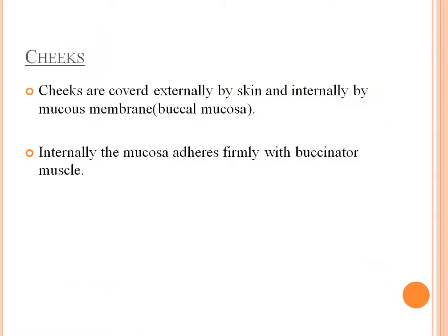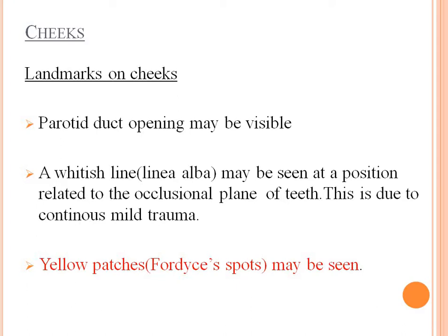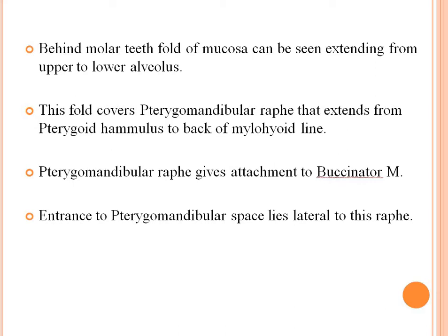The cheeks are covered externally by skin and internally by the mucous membrane, the buccal mucosa. Internally, the mucosa adheres firmly with the buccinator muscle. Landmarks of the cheek include the parotid duct openings, which may be visible, and a whitish line called linea alba, seen at a position related to the occlusal plane. Behind the molar teeth, a fold of mucosa extends from the upper to the lower alveolus, covering the pterygomandibular raphe that extends from the pterygoid hamulus to the back of the mylohyoid line. The pterygomandibular raphe gives attachment to the buccinator muscle, and the contents of the pterygomandibular space lie lateral to the raphe.